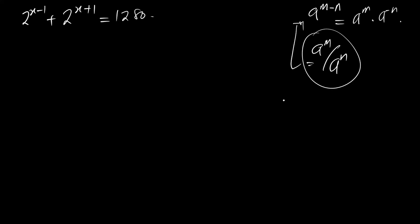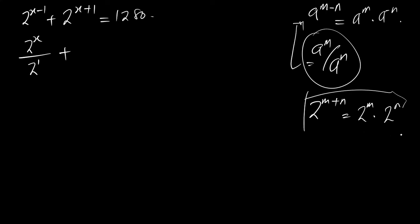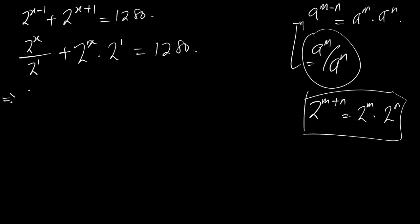So we're going to use that same expression. We'll say 2 to the power x divided by 2 to the power 1. And we also have 2 to the power m plus n, which is the same thing as 2 to the power m times 2 to the power n. So we'll say 2 to the power x times 2 to the power 1 equals 1280. Anything raised to the power 1 is that same thing. So we have 2 to the power x divided by 2, plus 2 to the power x times 2, which is equal to 1280.